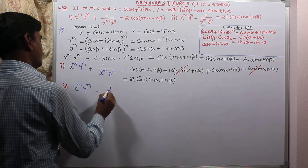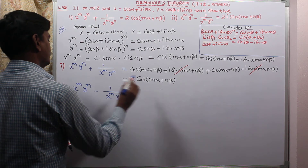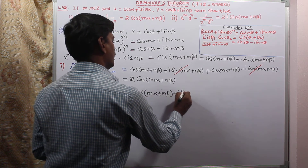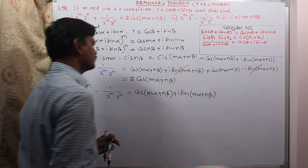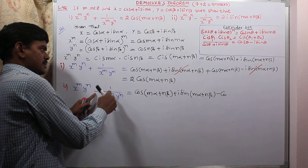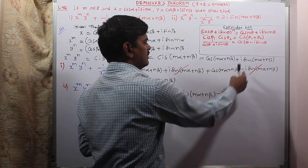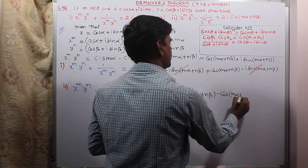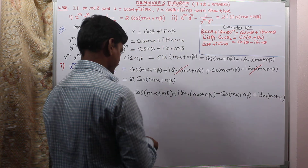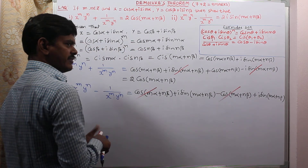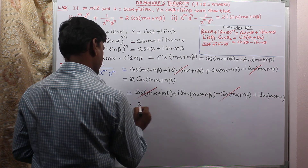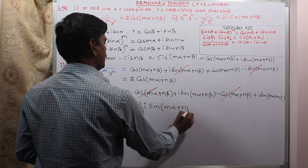For the second proof, we take x^m · y^n − 1/(x^m · y^n). Similarly substituting, we have cos(mα + nβ) + i sin(mα + nβ) minus cos(mα + nβ) − i sin(mα + nβ). Due to the minus sign, the signs change: the cos terms cancel, and we are left with two times the same i sin term. So the result is 2i sin(mα + nβ), which proves the second result.